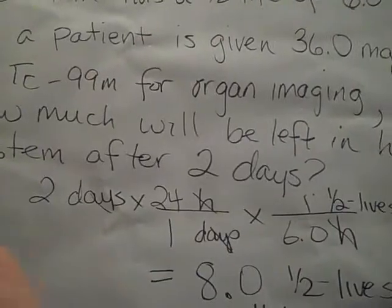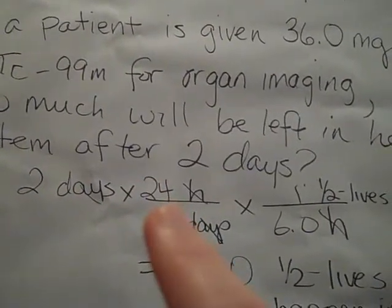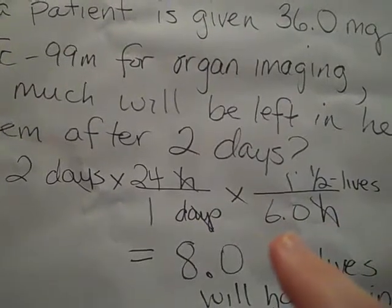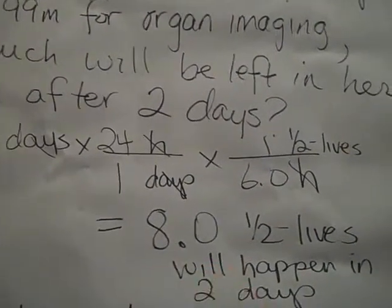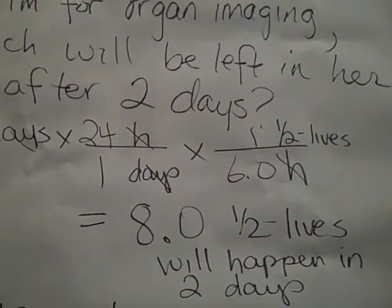We did the math, we multiplied 2 times 24, got 48 hours, divided it by six hours per half-life, and we ended up with eight half-lives that would occur in two days.